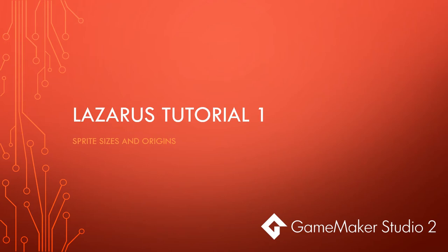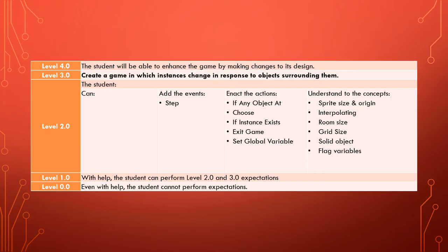Here we are with our new tutorial series for GameMaker Studio. This time we're going to learn to make a game called Lazarus. Our learning goal for this tutorial series is level three: to create a game in which instances change in response to objects around them.